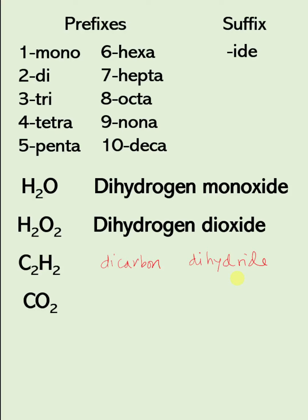How about this one? We are all familiar with this — this one is carbon dioxide. Now what do you think is the problem here? We're supposed to use the term mono because we have one carbon. But here, don't use the prefix mono when it's on the first element. So in this case, the first element is carbon, so we don't use the prefix mono here. But for the second element, since we have two oxygens, we use the prefix di, then the name of the element, oxygen, then change the last part to -ide.